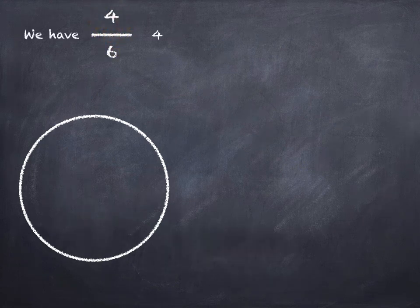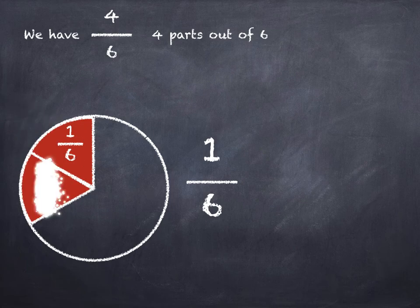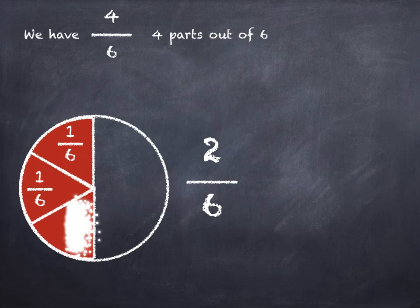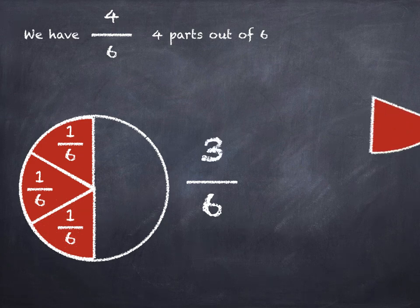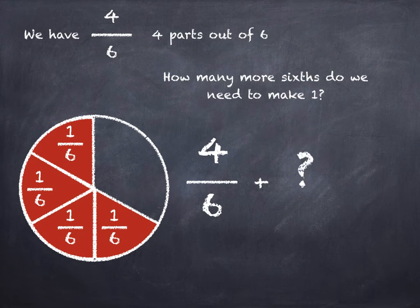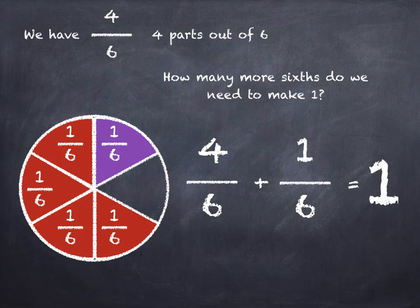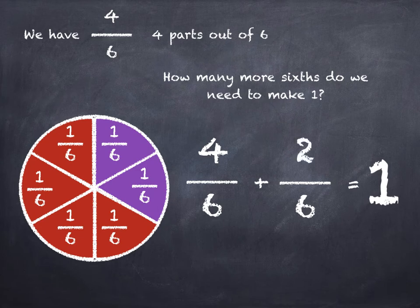This time we've got four sixths — four parts out of six. One sixth, two sixths, three sixths, and four sixths. How many more sixths do we need to make one? Four sixths and how many equals one? Let's see. One sixth and two sixths. So four sixths plus two sixths equals one.